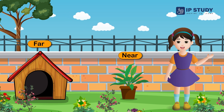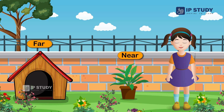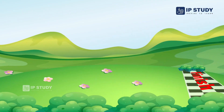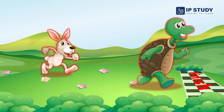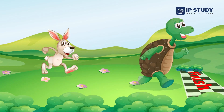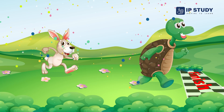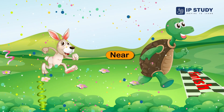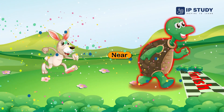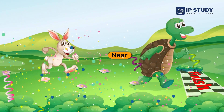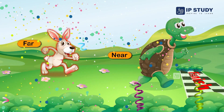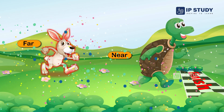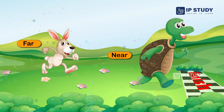And now one question for you. Tell me which of these is near the finish line and which is far? Perfect answer! The tortoise is near to the finishing line, and the rabbit is far from the finishing line.